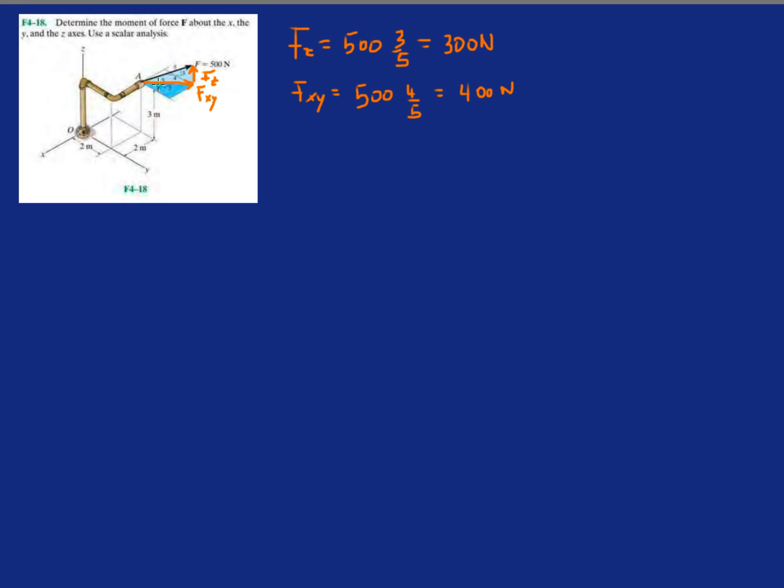Now we need to break the FXY into this component in green which is pointing in the positive Y direction, and then this component in this other green component which is pointing in the negative X direction. So let's do those two. FX is going to be negative because pointing in the negative direction and it'll be FXY which is 400, and let's see what side is parallel to the X, it's the three, so it's going to be 3 over 5.